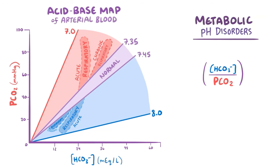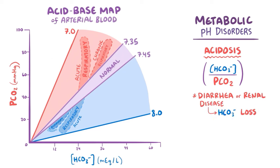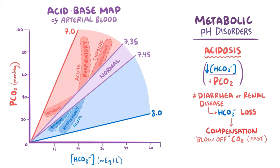In metabolic pH disorders, the main problem is an abnormality in the bicarbonate concentration. Metabolic acidosis might result from diarrhea or renal disease, where severe bicarbonate loss causes the bicarbonate concentration to dip below 22 mEq/L, decreasing the pH. As compensation, the respiratory system immediately tries to blow off carbon dioxide by taking deeper and more frequent breaths, decreasing the pCO2. This compensation starts within minutes, and on the map, metabolic acidosis is characterized by pH lower than 7.35, bicarbonate below 22 mEq/L, and pCO2 below 35 mmHg.